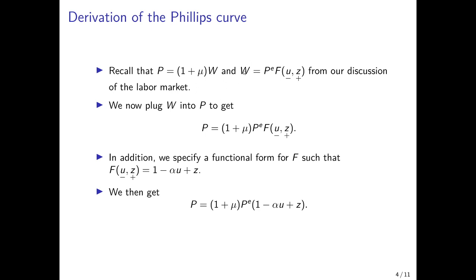We can now plug in the wage from the wage setting equation into the price setting equation to get the price level expressed in terms of the markup — the bargaining power of firms — the expected price level, and the function f(u, z) that we had from the wage setting equation. We suppose a functional form where f(u, z) equals 1 minus alpha·u, which captures the negative dependence on u, plus z, which captures the positive dependence. We can then plug this in to get the relationship with a linear term at the end.